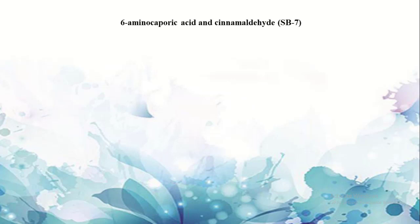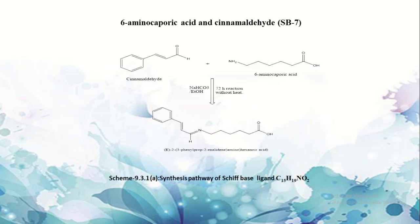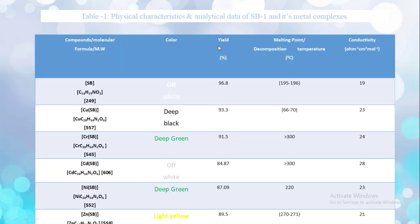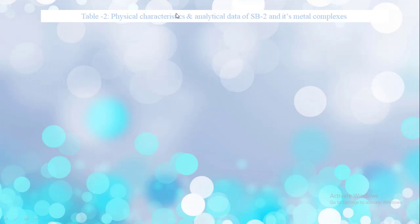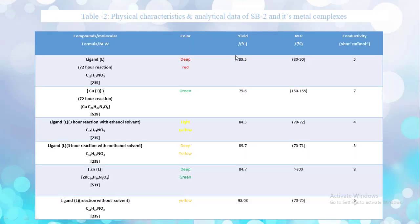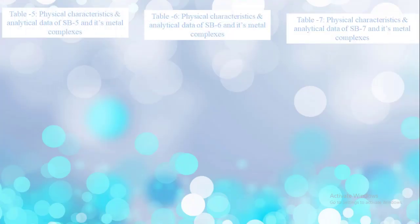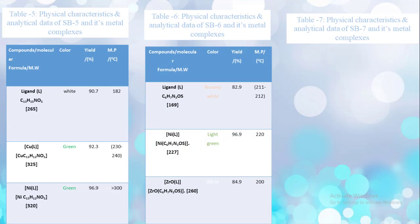6-aminocaproic acid and cinnamaldehyde, Schiff base ligand seven. Here is the synthesized pathway with molecular formula C15H19NO2. Physical characterization and analytical data of Schiff base ligand one and its metal complex: molecular formula, color, yield, melting point, decomposition temperature, conductivity. Tables two through seven represent the same characterization for other ligands and complexes.